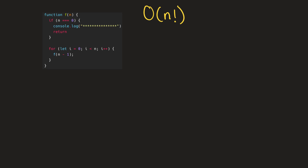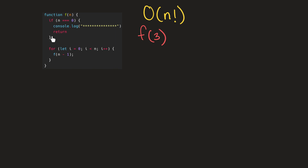Let's start with an example. Let's say that we pass the number three to our function. What will happen first is we'll check to see if n, which is three, is equal to zero — which it's not — and then we'll move on to the for loop. For every iteration up until three, from zero up until n, we're going to recursively call this function again, this time using n minus one.